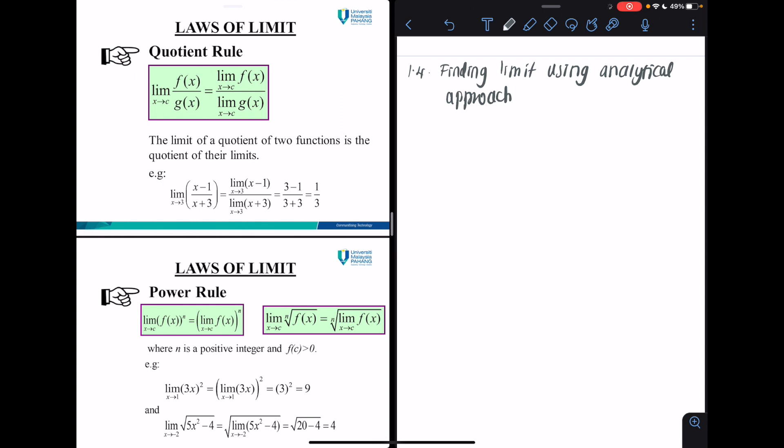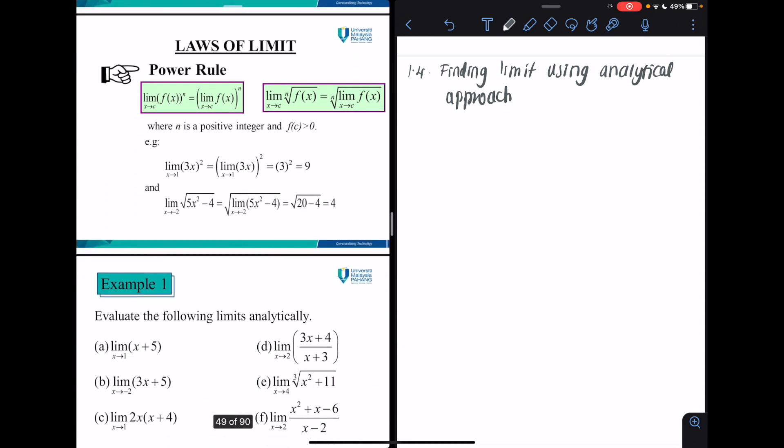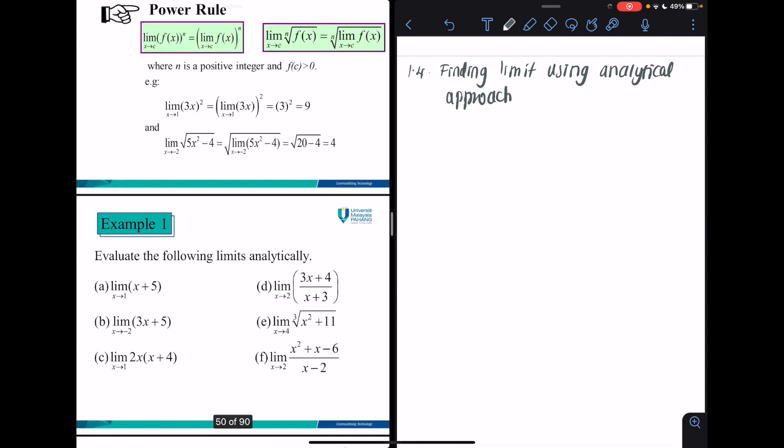Let's move to this Example 1, where the question asks you to determine the limit for function x plus 5, where x is approaching 1, by using the approach or the laws that have been explained earlier.